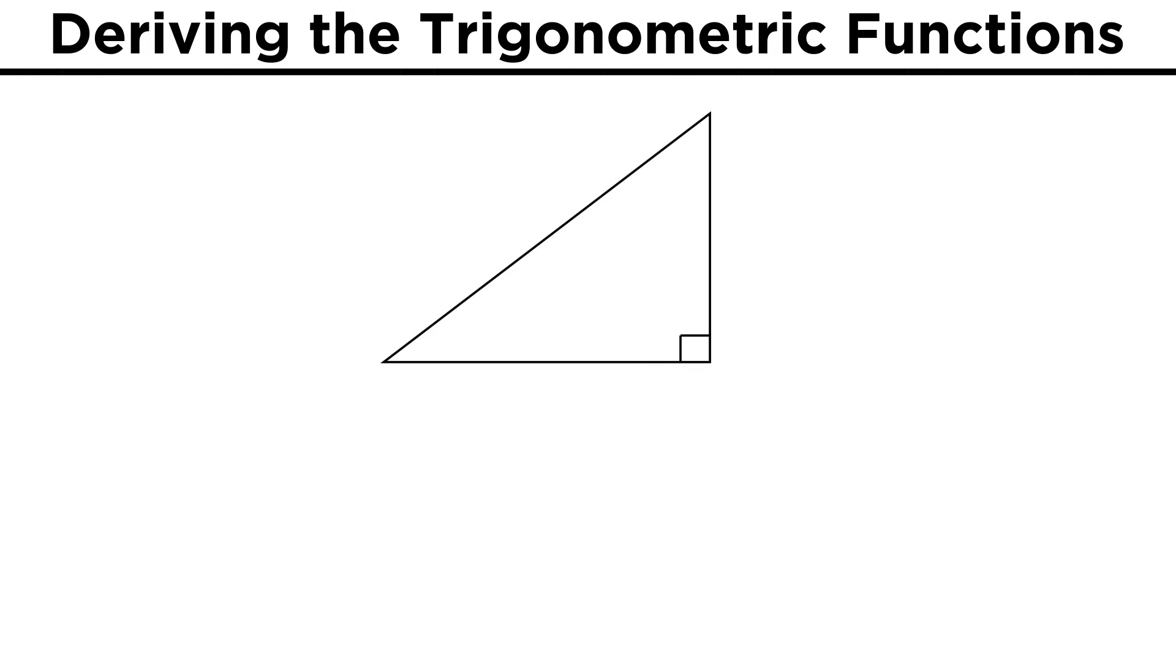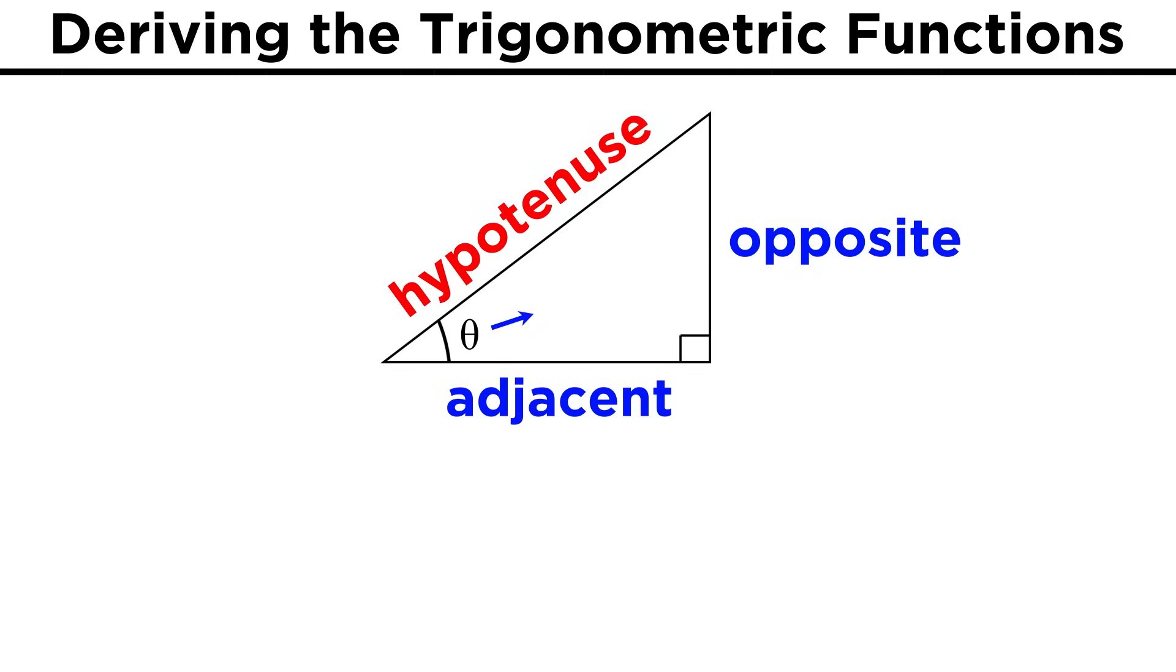Let's forget the circle for a second and just look at a right triangle. Here are the two legs, the hypotenuse and the angle of interest, theta. From now on, we will differentiate between the two legs by calling this one the adjacent leg, because it is the leg right next to the angle, and this one will be the opposite leg, because it is directly opposite the angle.